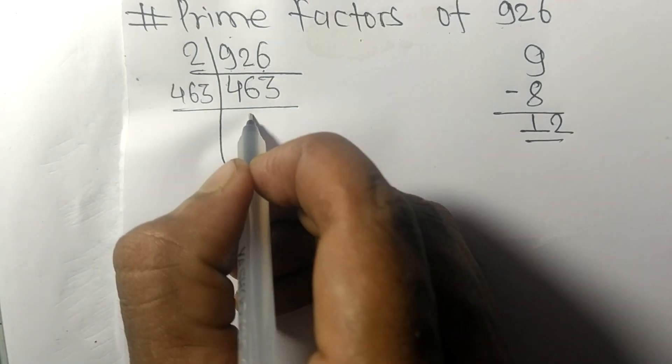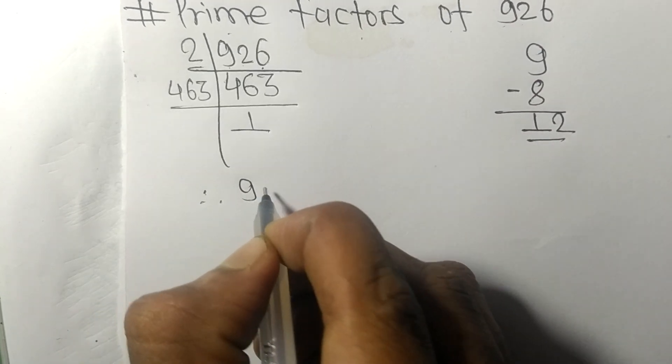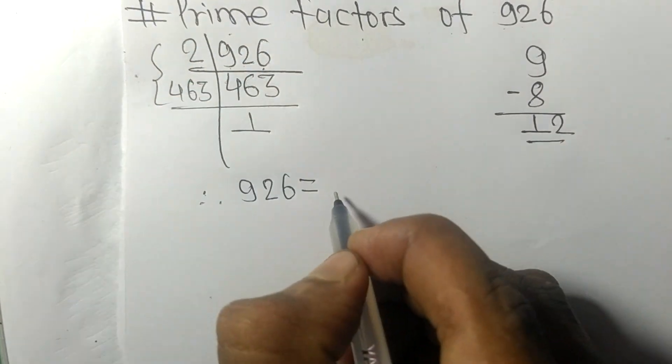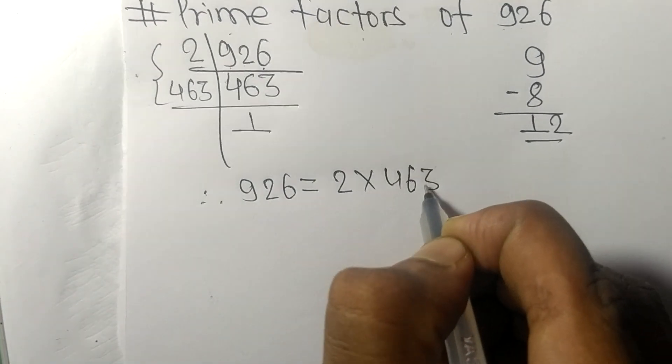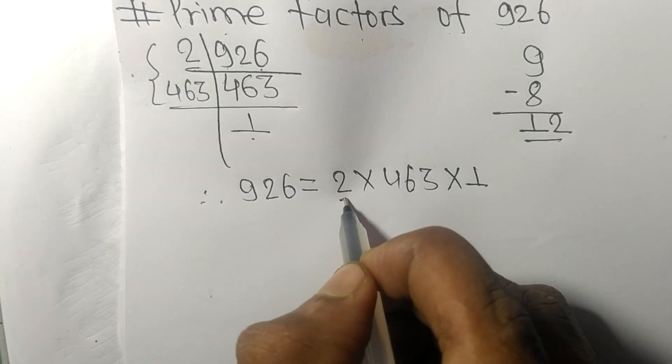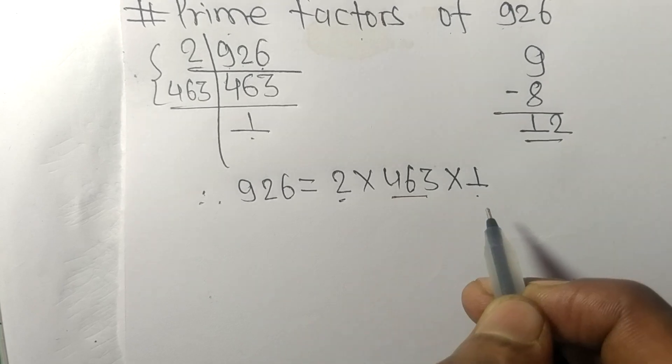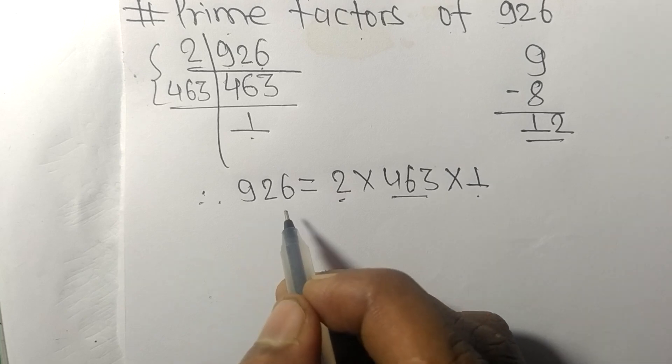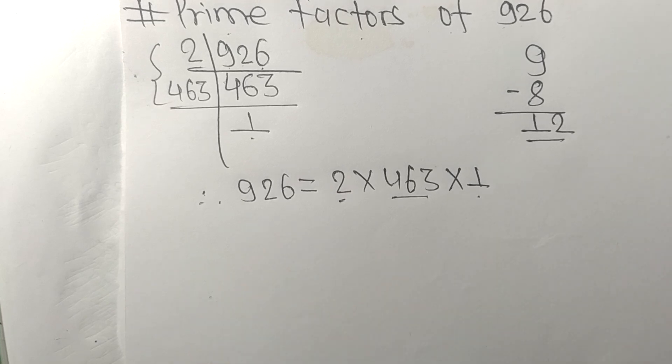On dividing we get 1. Therefore, 926 is equal to 2 times 463 times 1. So 2, 463, and 1 are the prime factors of 926. So this much for today, and thanks for watching.